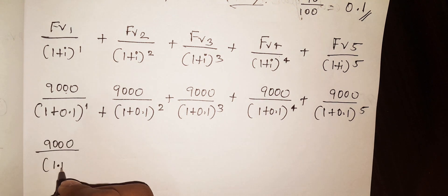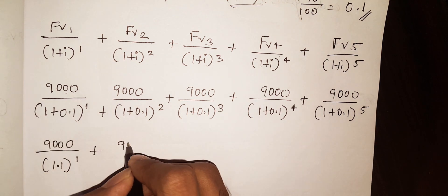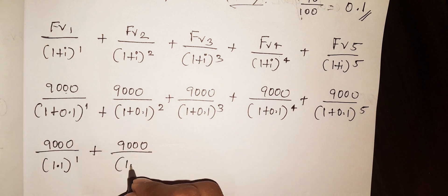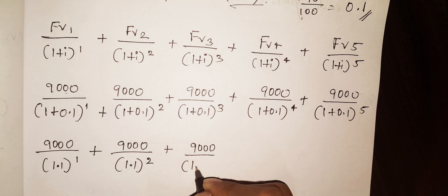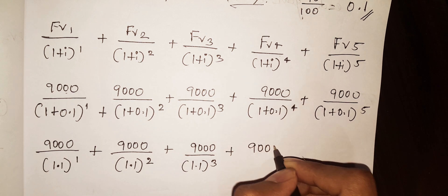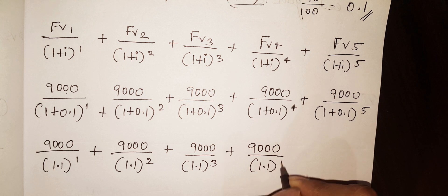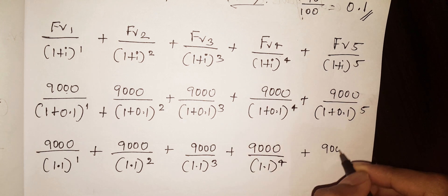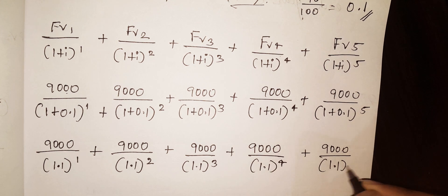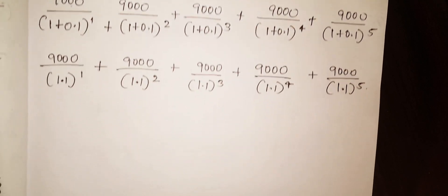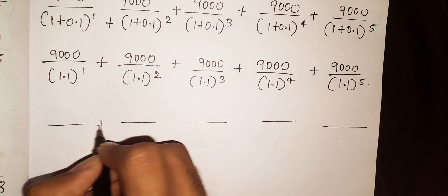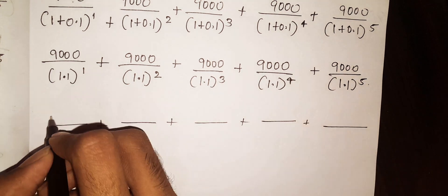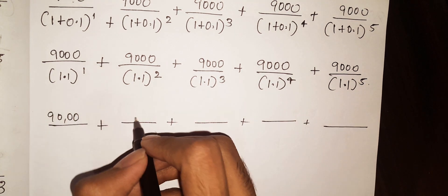So we have 9000 divided by 1.1 to the power of 1, plus 9000 divided by 1.1 to the power of 2, plus 9000 divided by 1.1 to the power of 3, plus 9000 divided by 1.1 to the power of 4, plus 9000 divided by 1.1 to the power of 5. Since the cash flow is the same, every year is Rs. 9000.